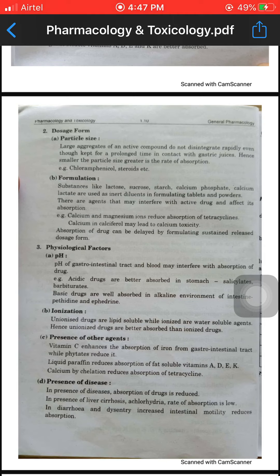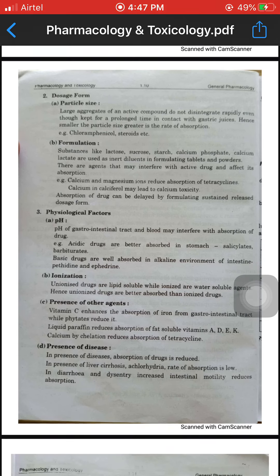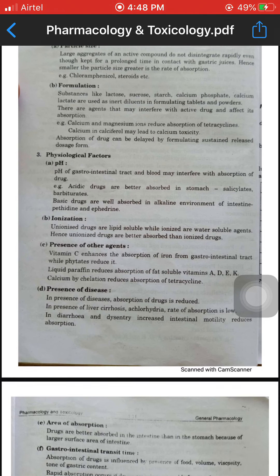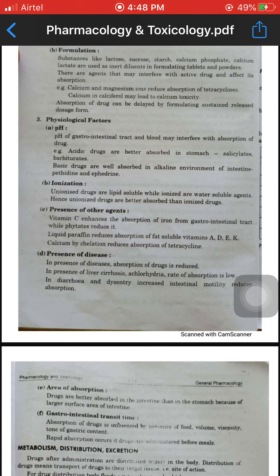Calcium and magnesium ions reduce the absorption rate of tetracycline. Absorption of drug can be delayed by formulating sustained release dosage forms. Physiological factors include pH, ionization, presence of other agents, presence of disease, area of absorption, and gastrointestinal transit time. The pH of the gastrointestinal tract and blood may interfere with absorption of the drug.